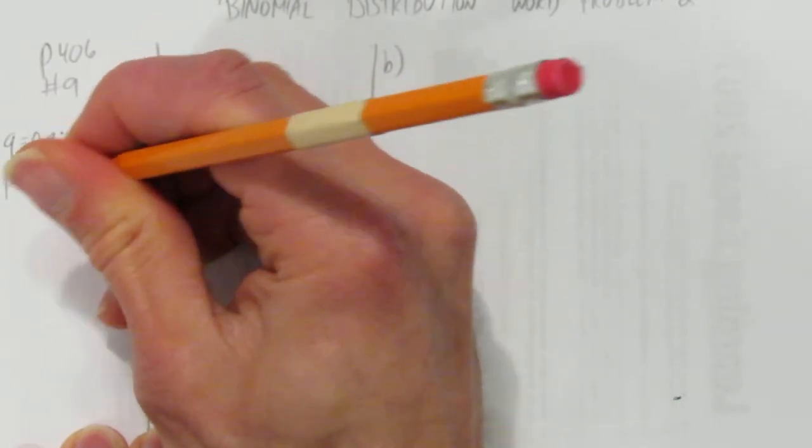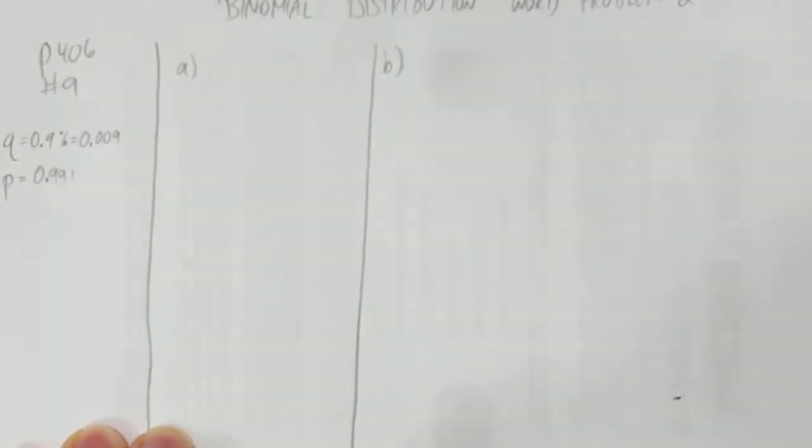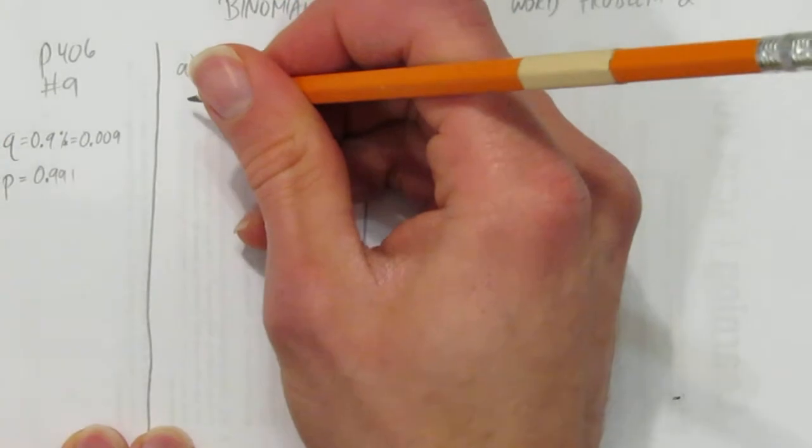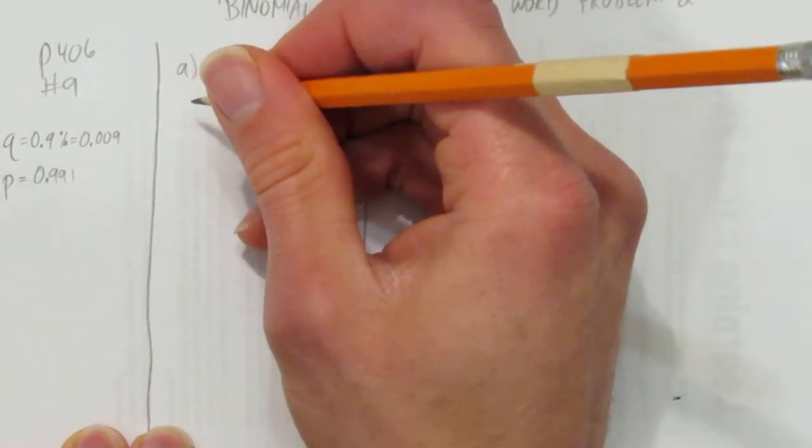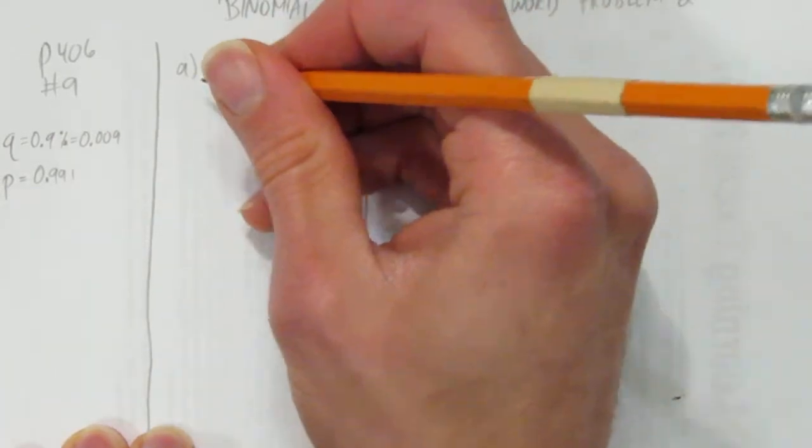Now we know the probability of success and the probability of failure. So the question asks, in a batch of 100 computer chips, what is the probability that exactly 1 is defective?